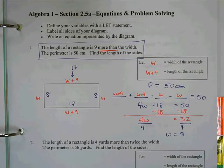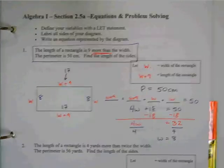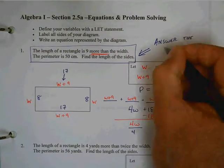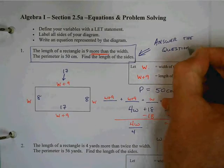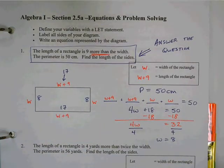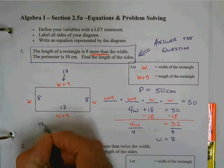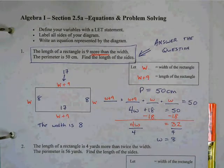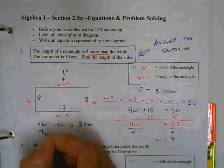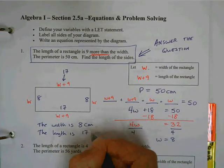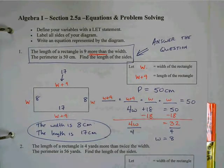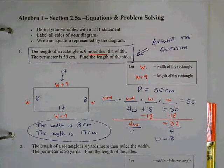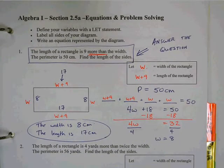Now, what is the question? We always have to make sure you answer the question. What's the question? Find the length of the sides. So we need to say the width is 8 centimeters. The length is 17 centimeters. You've got to answer the question when you're doing a story problem like that. Just make sure when you read back to the question, what are they asking us? Answer that question, whatever it is.